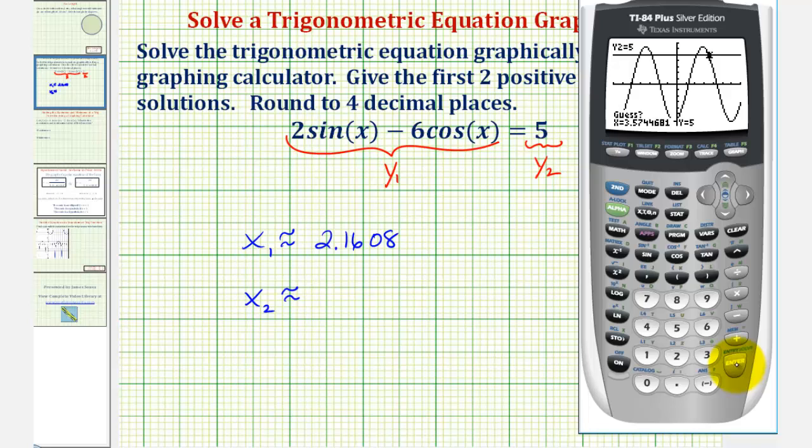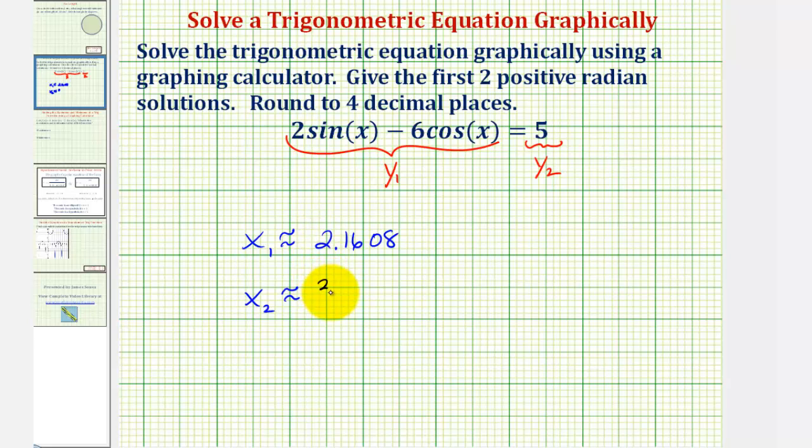And again we'll press enter three times. Enter, enter, enter. So the second positive radian solution would be approximately three point four seven eight nine radians. These would be the first two positive radians solutions to the given trig equation.